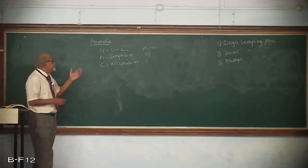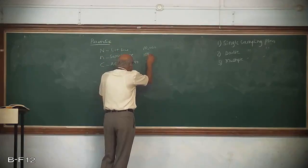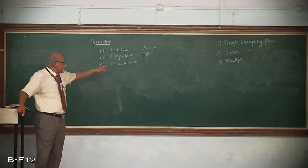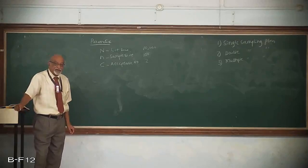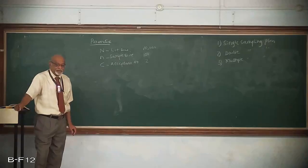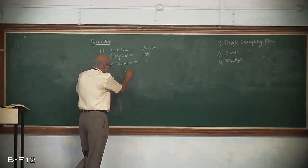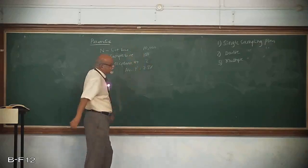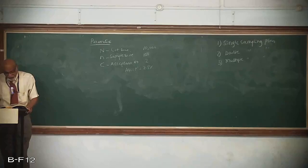Let me say the lot size is 10,000, sample size is 100, and the acceptance number is 2. Suppose the AQL — acceptable quality level — is 2.5%. Under these circumstances, what is the probability of acceptance of the lot?